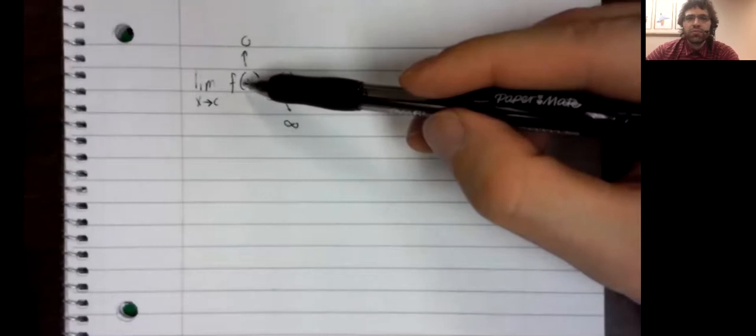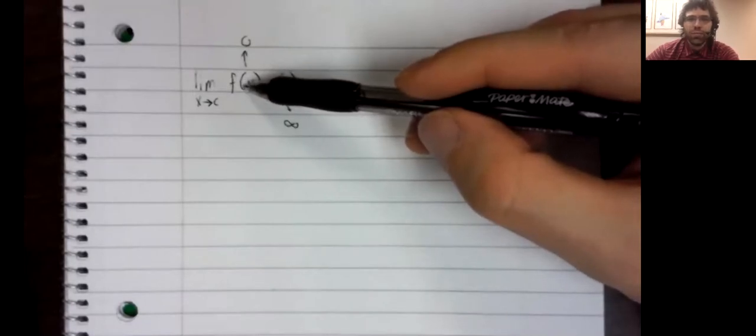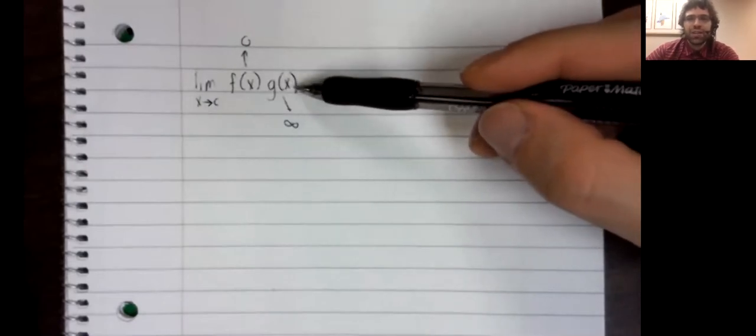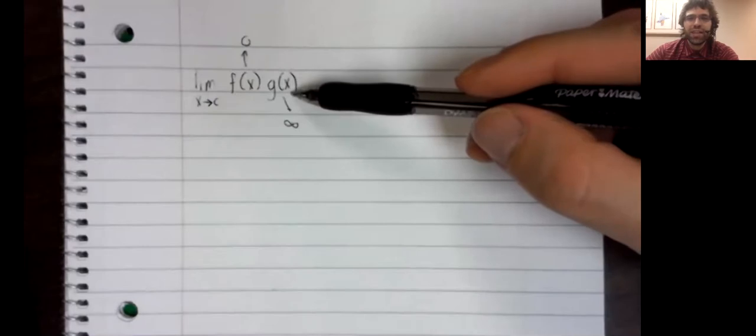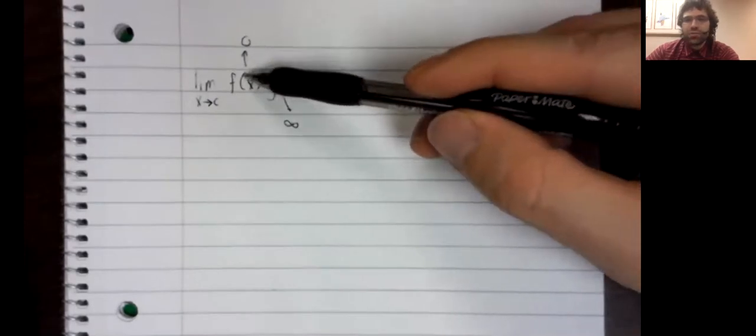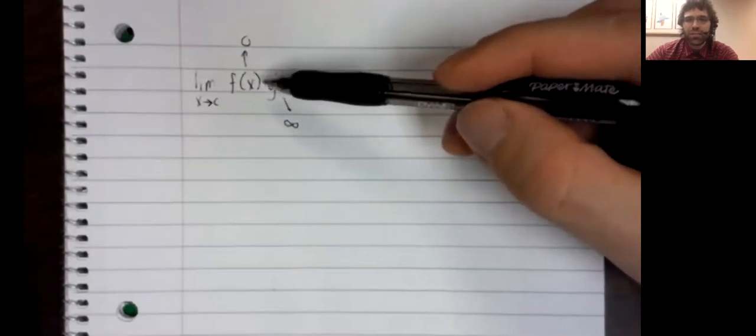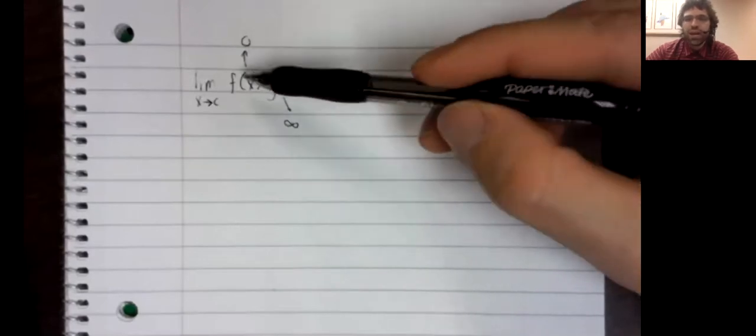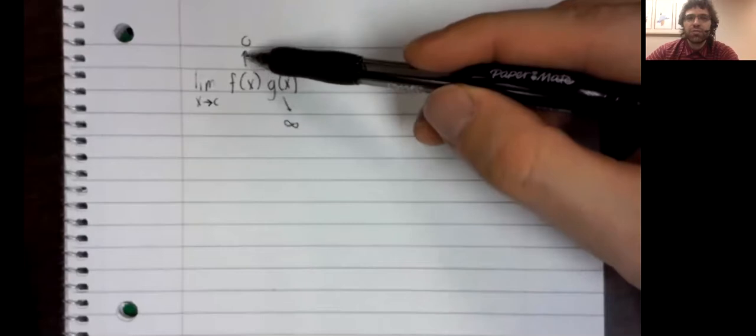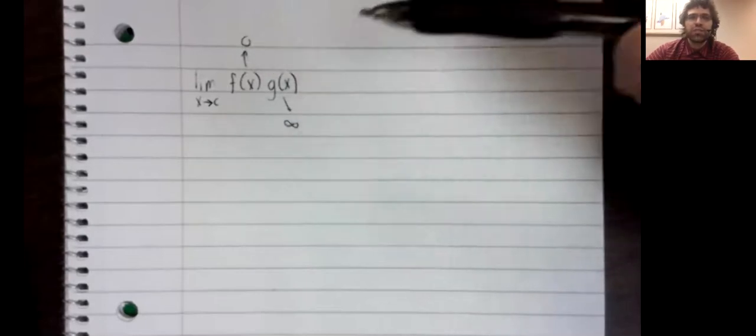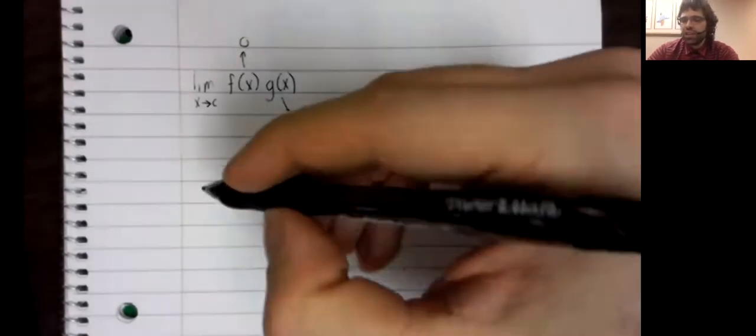Zero times pretty much anything is zero. Infinity times pretty much anything is infinity. So you see these terms are crashing with one another. F is trying to bring the product to zero, G is trying to bring the product to infinity.